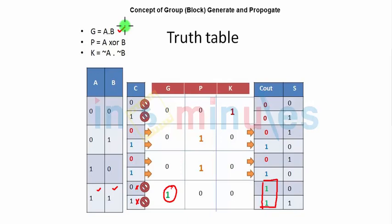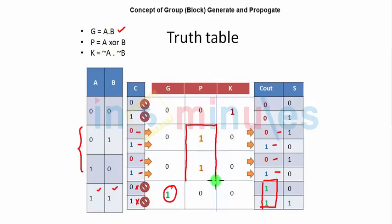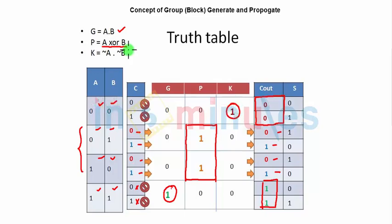We also saw that when A and B alternate, Cin is propagated to Cout — the propagate signal P is high, so Cout equals Cin. Propagate P equals A XOR B. Additionally, when A and B are both 0, Cout is killed — the kill signal is high, corresponding to a NOR gate.